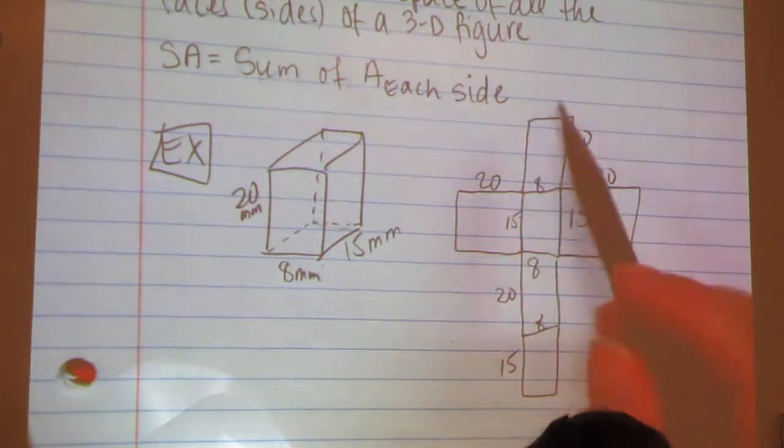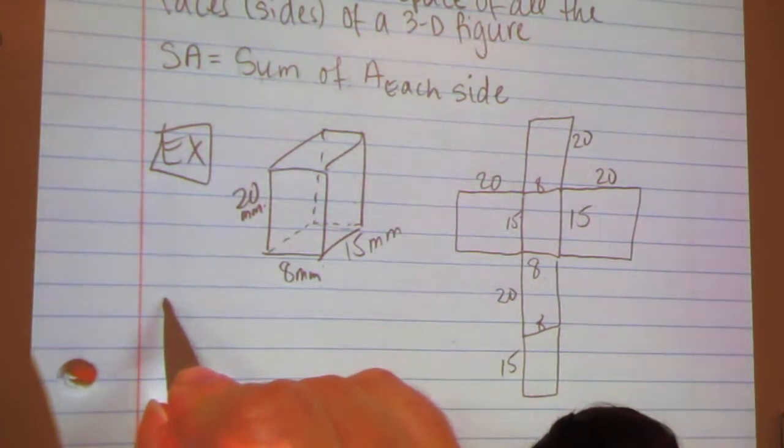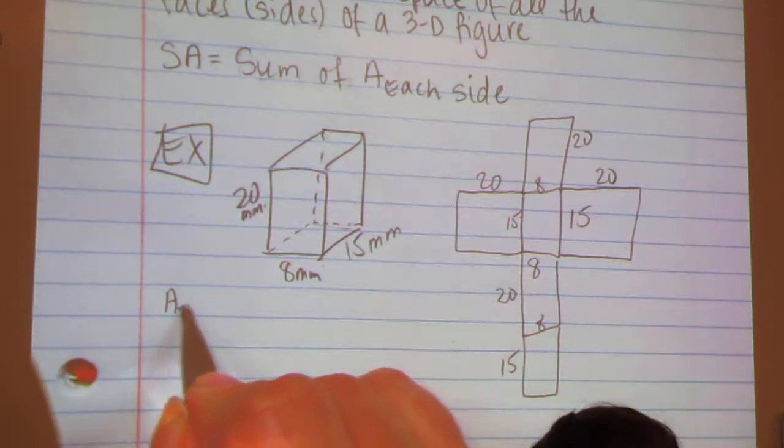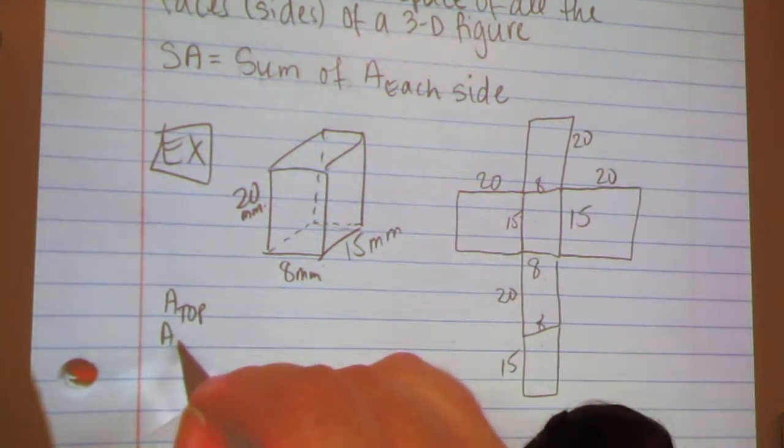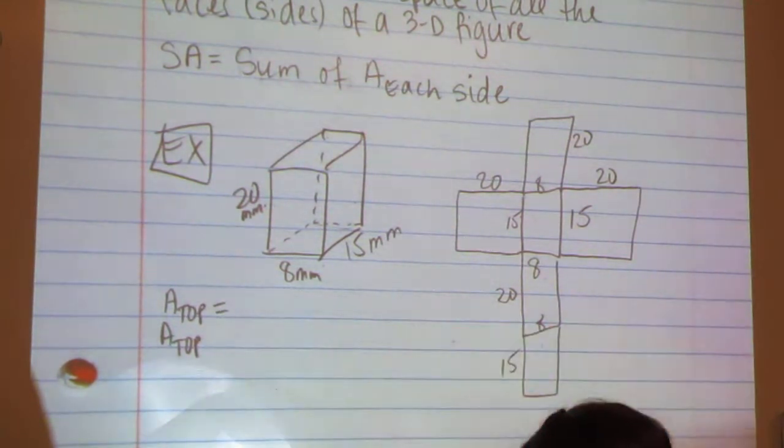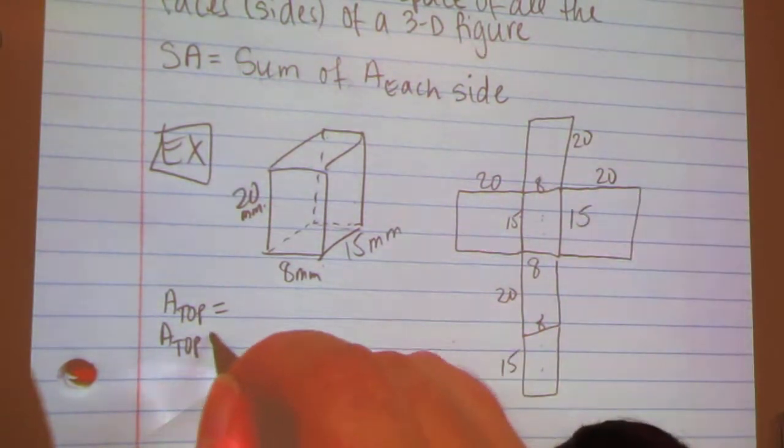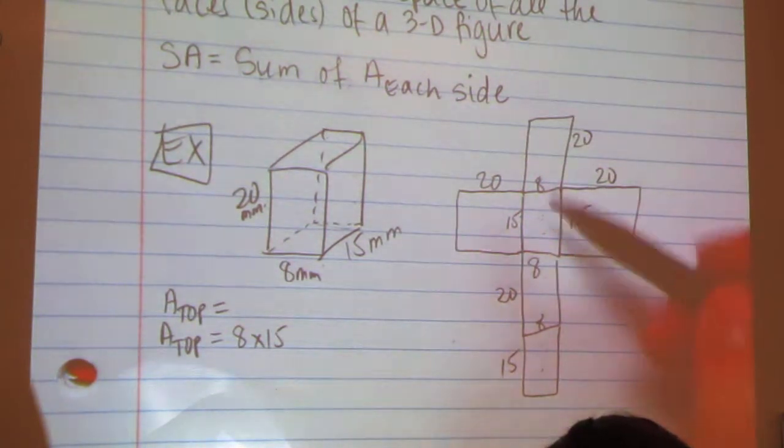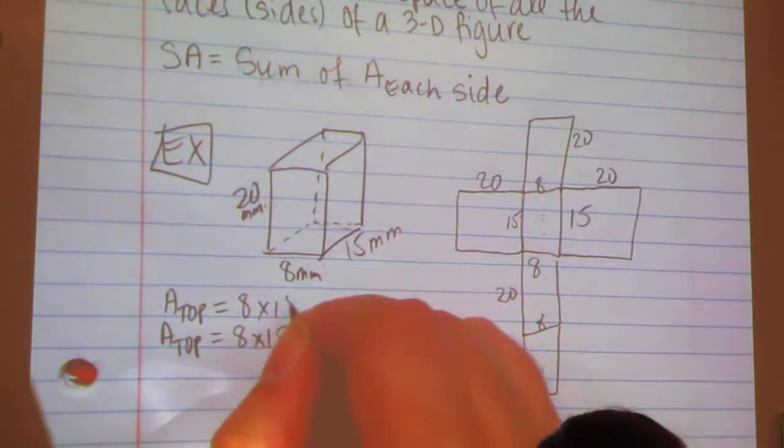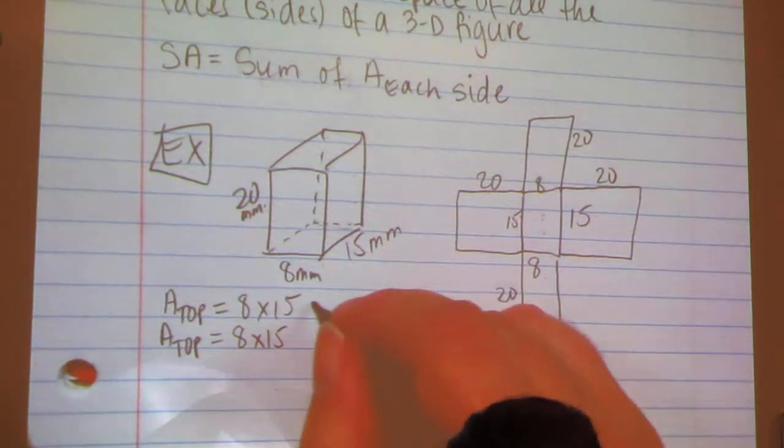Now I find the area of all 1, 2, 3, 4, 5, 6 sides, and I add them together. So I have the area of the top and the bottom, which are going to be the same, and it's a rectangle. So the top and the bottom, here's the bottom, 8 by 15, length times width. And the top is identical, 8 by 15. And 8 times 15 is 120.